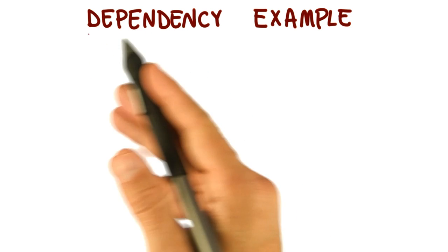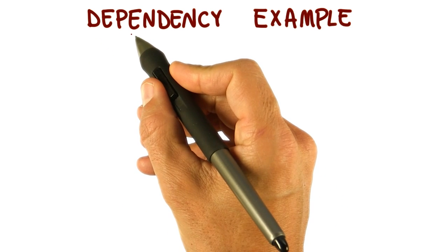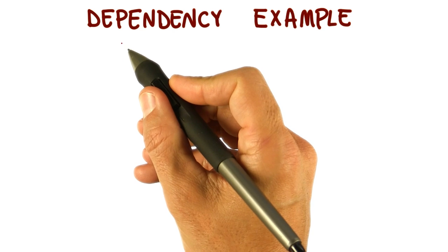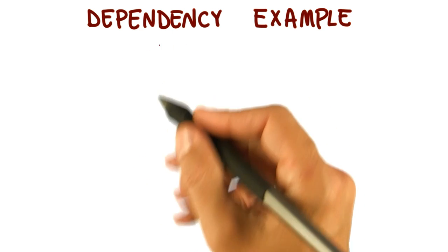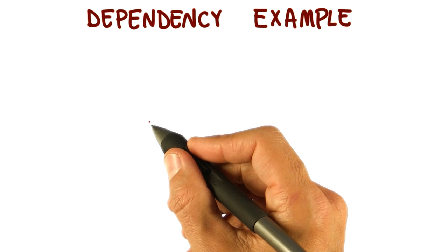So let's start with the dependency example. A dependency, as we said, expresses the relationship between a supplier and the client that relies on it. There is a dependency because changes in the supplier can affect the client.